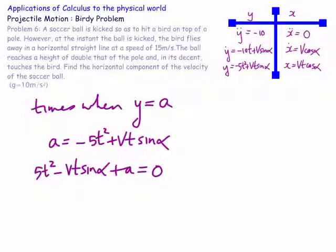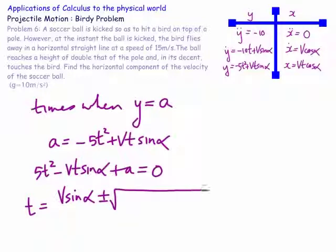So we can solve this for t. t equals v sine alpha plus or minus the square root of v² sine² alpha minus 4 times 5 times a — that's minus 20a — all over 10. These are the times when the y value is a.